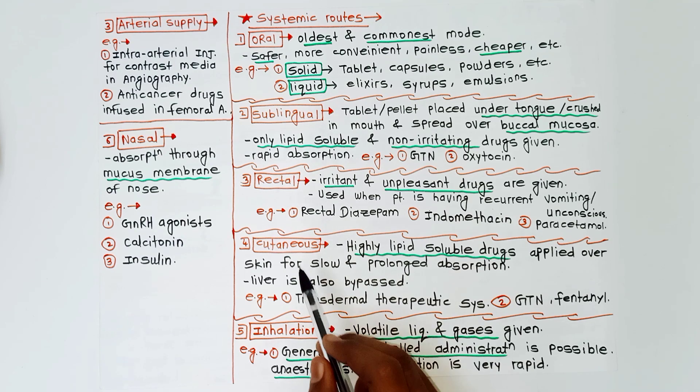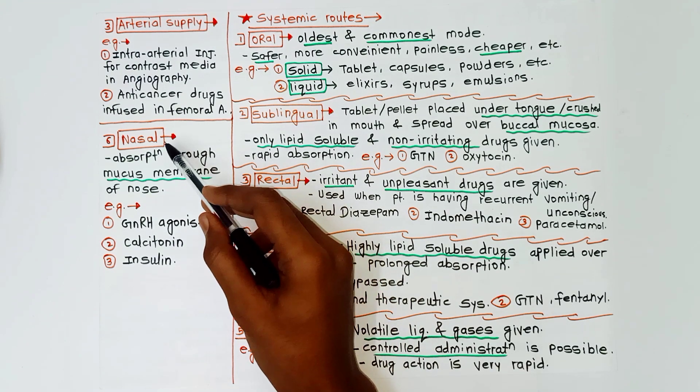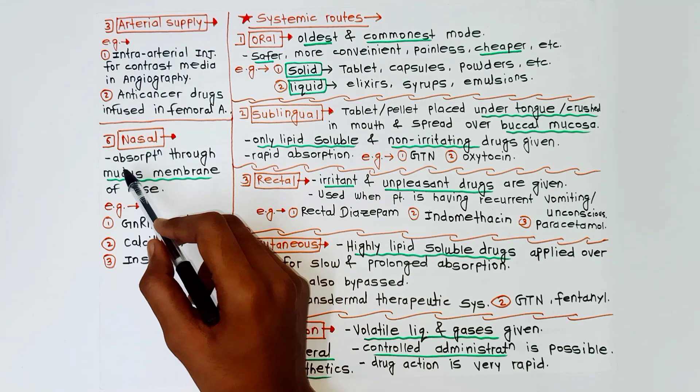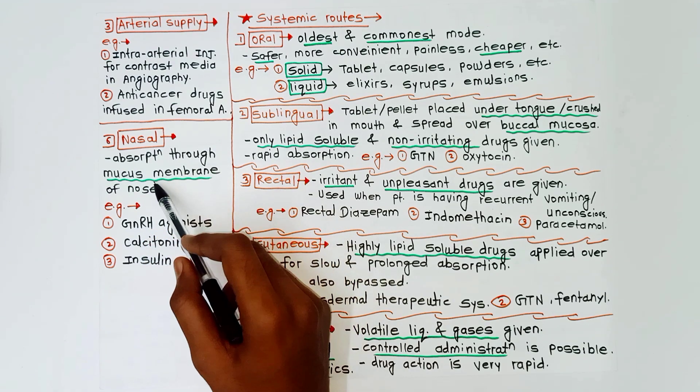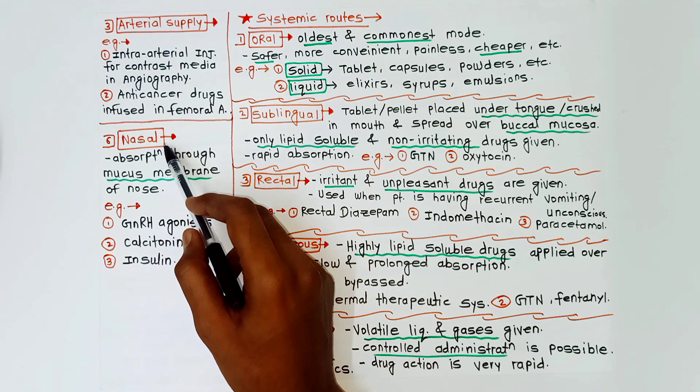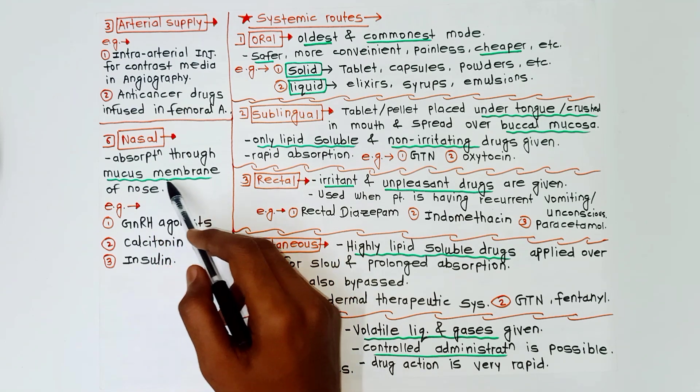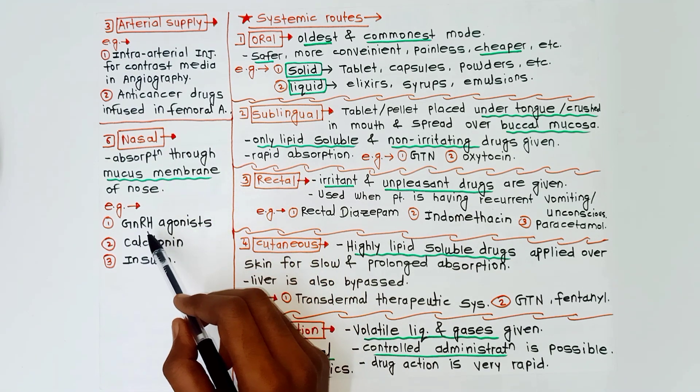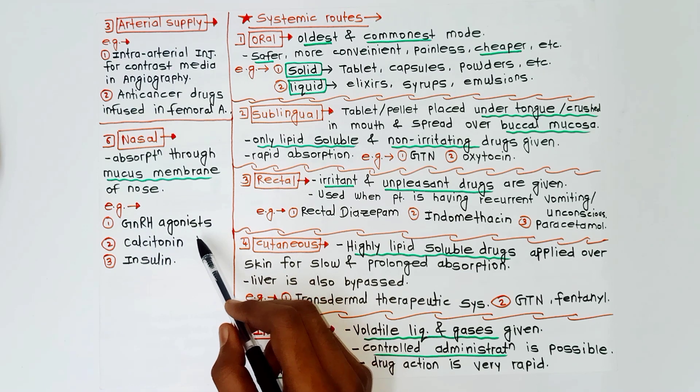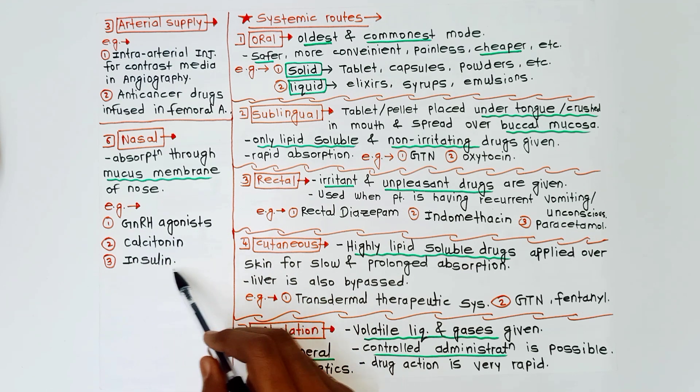Next route is nasal. Absorption occurs through the mucous membrane of nose. Examples of this route are GNRH agonists, calcitonin, and insulin.